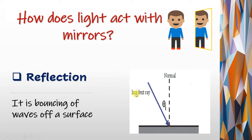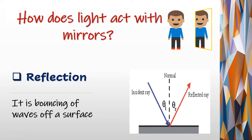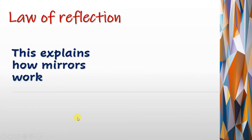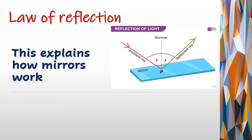When the light falls on any mirror, reflection of light occurs. How does reflection occur? Reflection occurs by a law called the law of reflection, and the law of reflection explains how mirrors work.